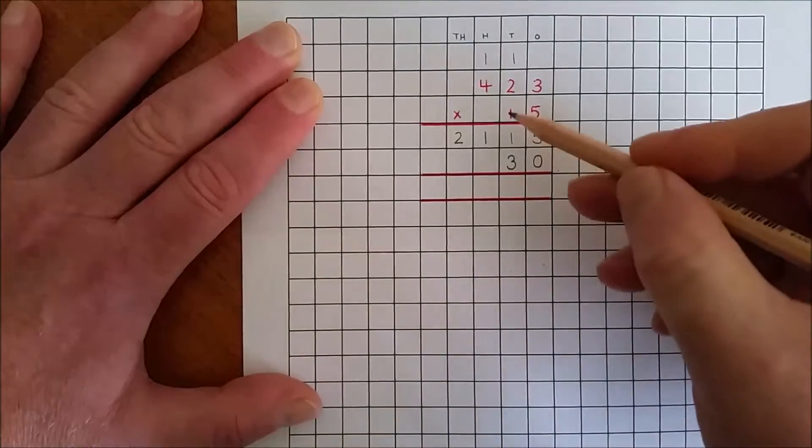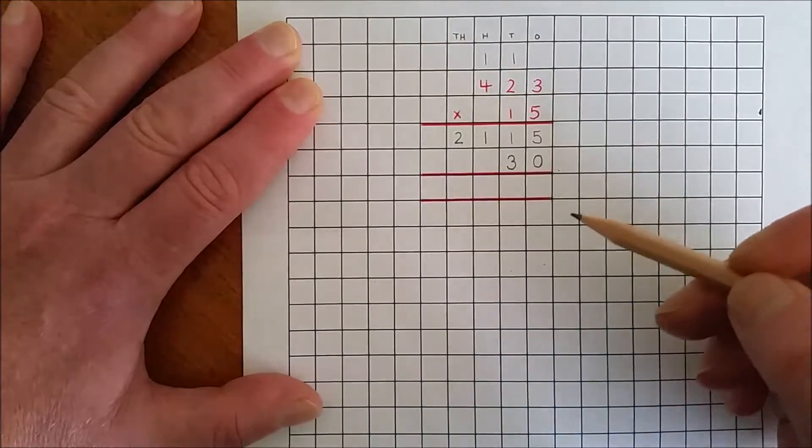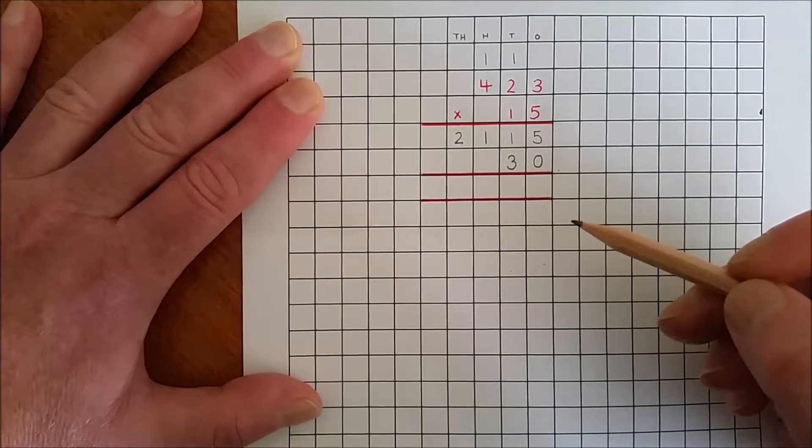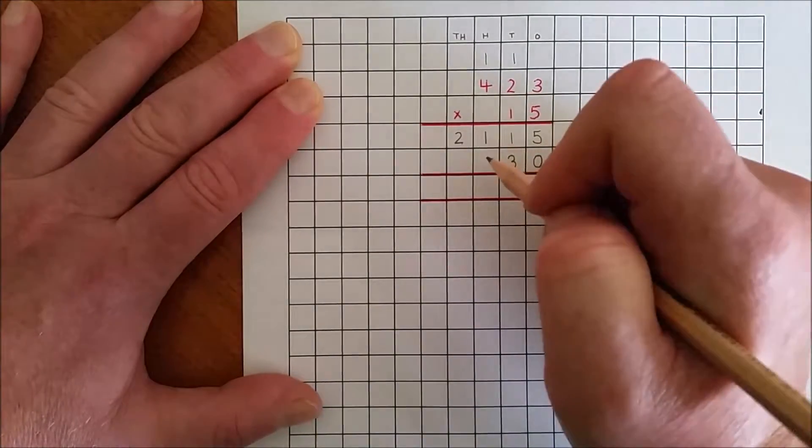Ten by two tens is twenty tens. Rename twenty tens as two hundred.